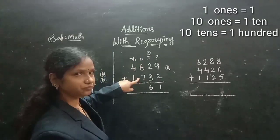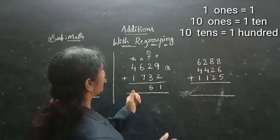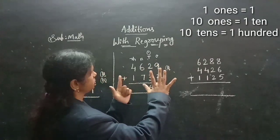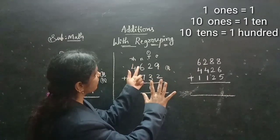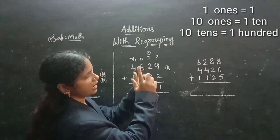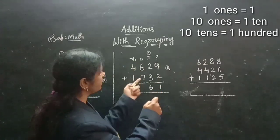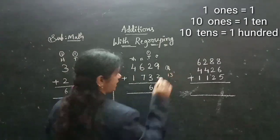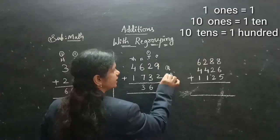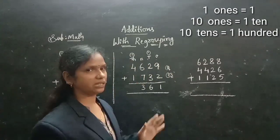Now the remaining numbers we will add here. 6 after 7 — first I open the 7 here. So 6 after 7, we need to add the 7. 7, 8, 9, 10, 11, 12, 13. 6 after 7 — we are getting 13 as the answer, children. So this 3 we are taking as the answer, and the next digit we are taking as carry on the 1000's.